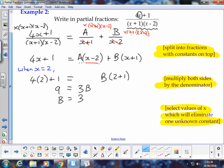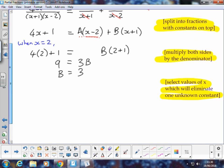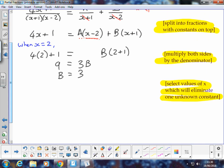I can repeat that process by choosing a different value of x to make the B term disappear, and if I look back up at B times x plus 1, and if I let x be negative 1, negative 1 plus 1 is 0, 0 times B is 0, that whole term is going to disappear.